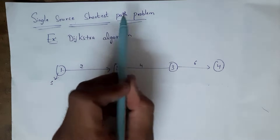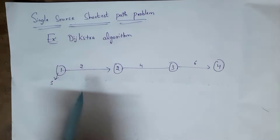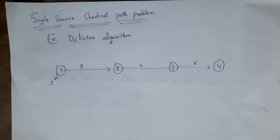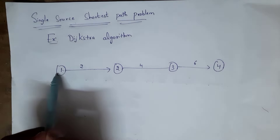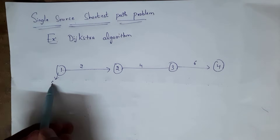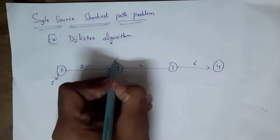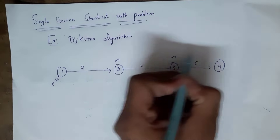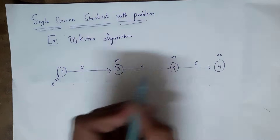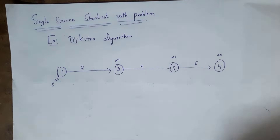Single source shortest path problem — single source means we need to select one source node, a single node. I am selecting node 1 as the source node. Now, initially mark all other nodes as infinity, meaning we have not yet visited those nodes, so I am marking their values as infinity.